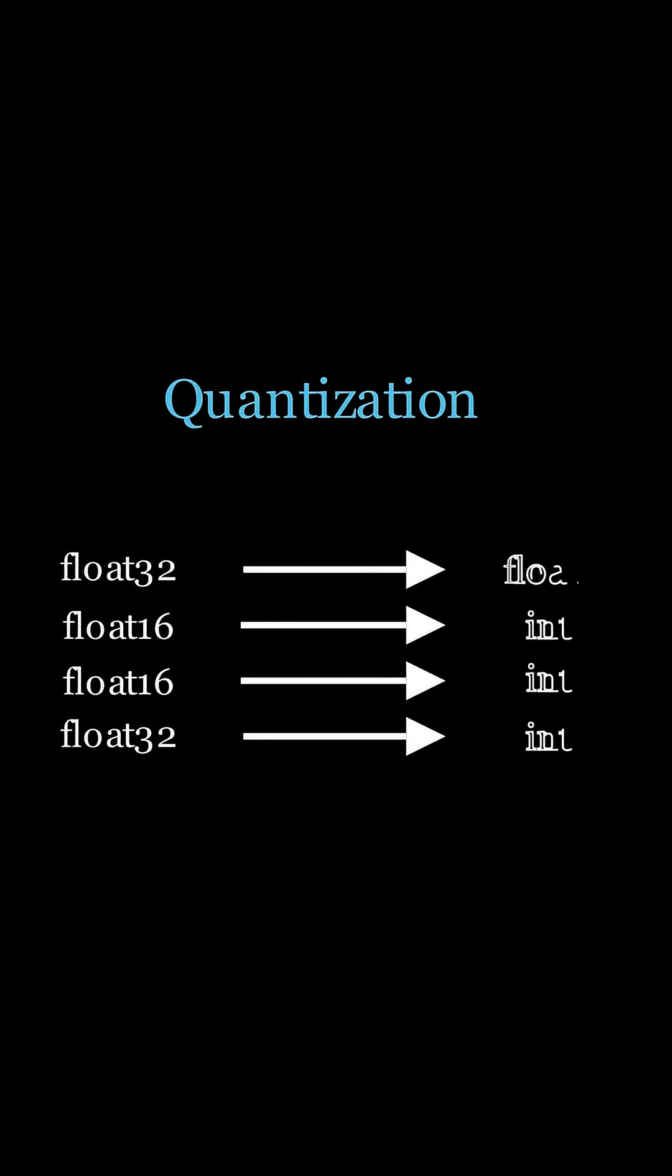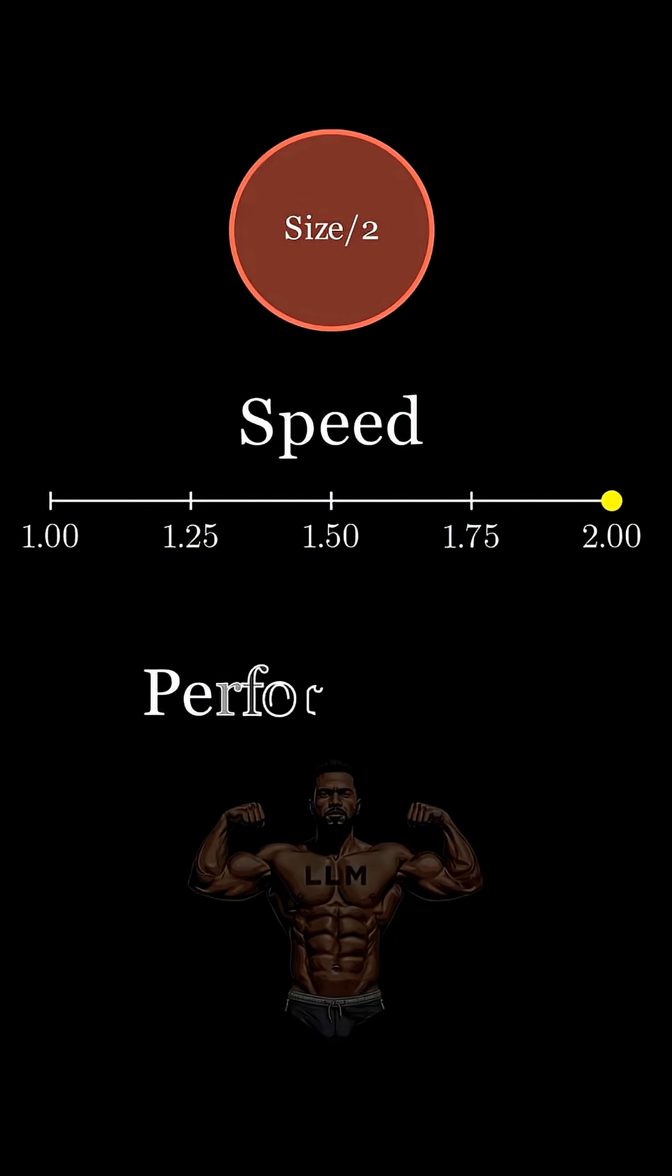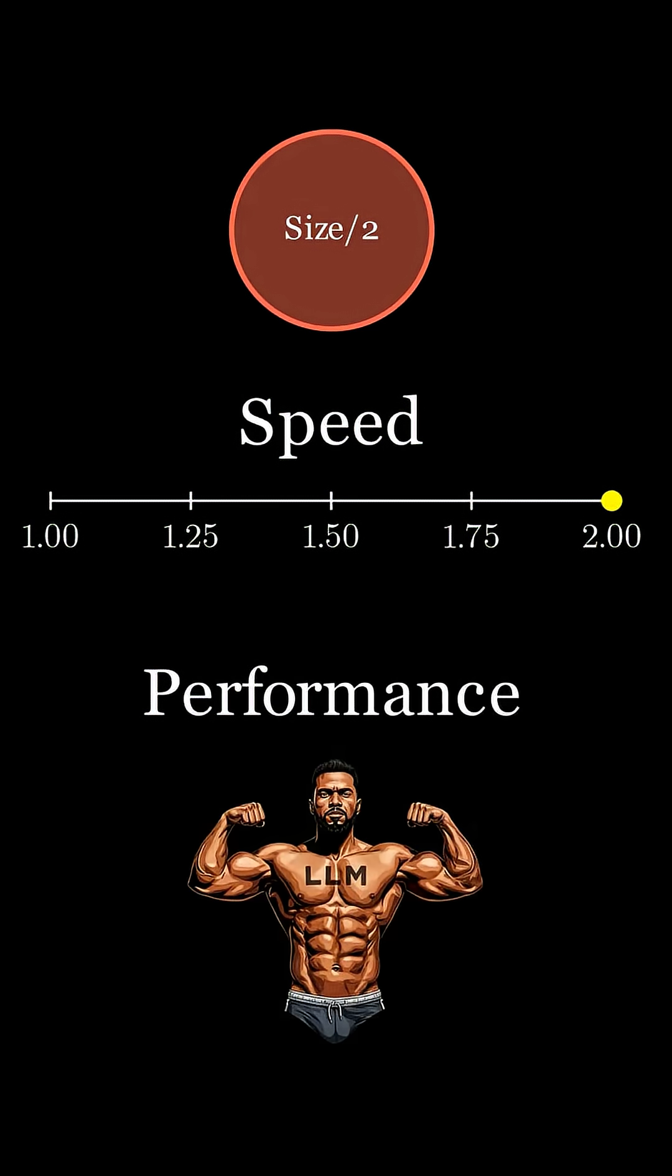An LLM is really just a big file full of numbers or weights and we perform operations on them. Quantization is the process of mapping those high precision weights like 16 or 32-bit floats into lower precision ones like 8 or even 4-bits. This makes the model smaller and faster while trying to keep the output as close to the original as possible.